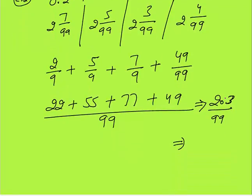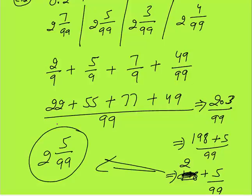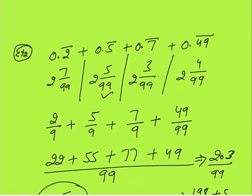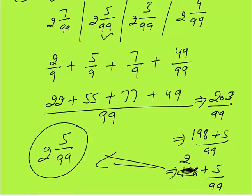203 by 99 — since 203 is not fully divisible by 99, we write 198/99 + 5/99, where 198/99 equals 2. So the answer is 2 plus 5 by 99, which matches option D. This is how you convert recurring decimals to fractions and solve all kinds of exam questions on this topic.